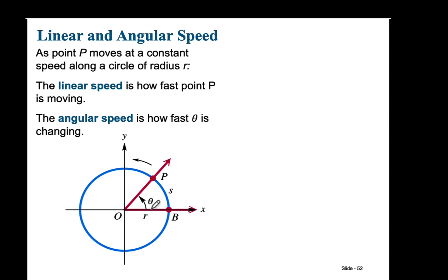Here's a visual: we have a circle, there's our point P starting here and traveling around the circle. The linear speed is how fast it's moving. The angular speed is how fast theta is changing. Think of a horse in training — a person stands in the middle with a rope and the horse is at point P. The horse's speed is the linear speed; how fast the person is spinning is the angular speed.